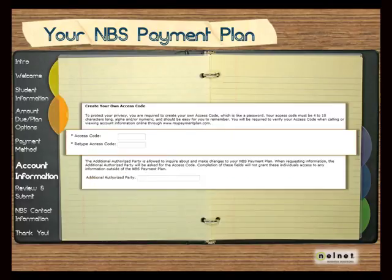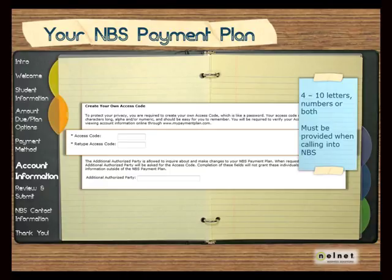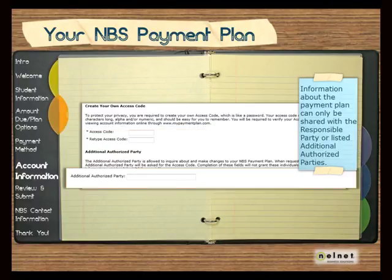You are now ready to create your access code. The access code must be 4 to 10 characters long. It can be letters, numbers, or a combination of both. If you contact NBS via telephone, you will be asked to provide this code. If anyone other than the responsible party will need access to the payment plan, add them as an additional authorized party. NBS can only share information about the payment plan with the responsible party or any listed additional authorized parties.